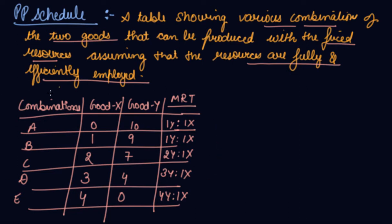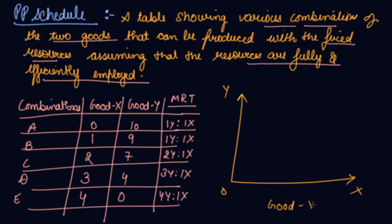This table shows the various combinations given your fixed resources that are fully and efficiently utilized - this is your PP schedule. When you plot this table on a graph, good X is always taken on the X-axis and good Y - the one you are sacrificing - on the Y-axis. Let's take good X as 1, 2, 3, 4, and 5, and the Y-axis on a scale of 2, 4, 6, 8, and 10.